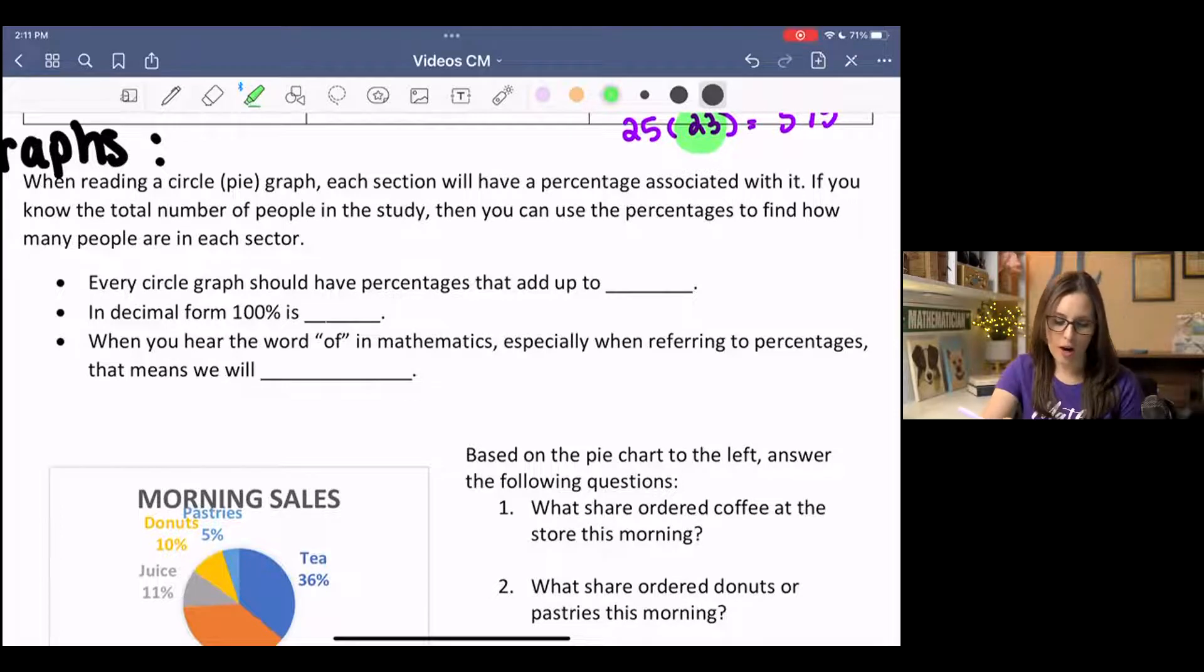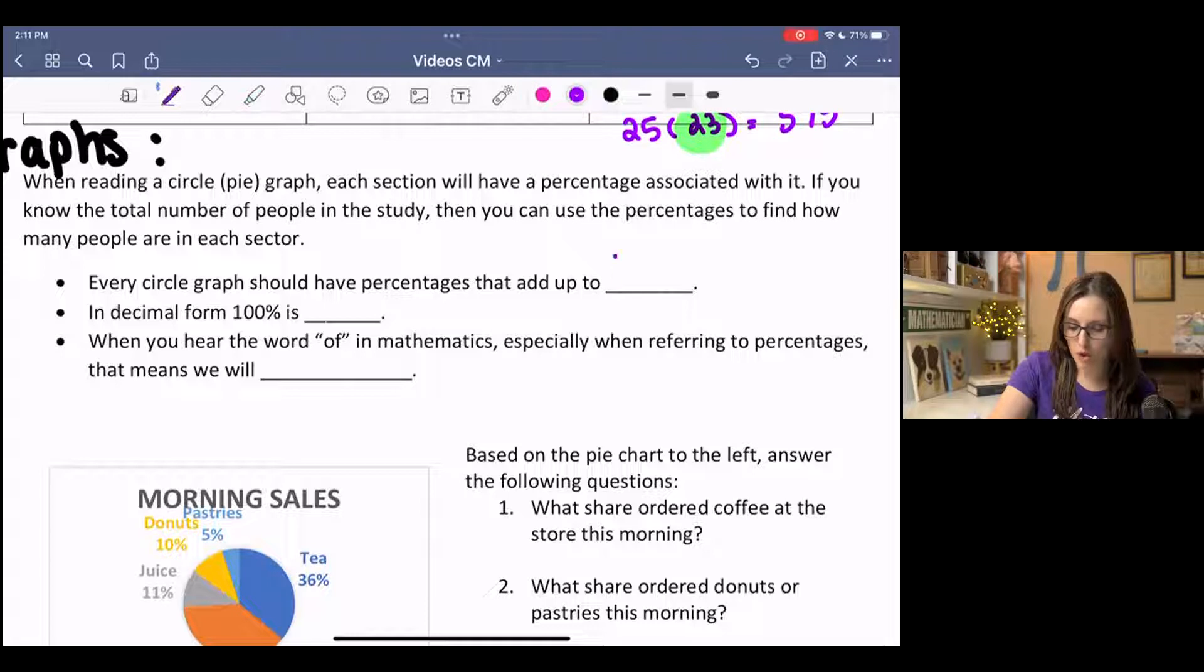And then some key things to know about circle graphs or pie graphs. A circle graph, every circle graph should have a percentage that adds up to 100. That's the highest it should go. And then in decimal form, 100% is equivalent to just 1. And then when you hear the word 'of' in mathematics, especially when referring to percentages, that means we will multiply.